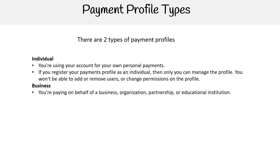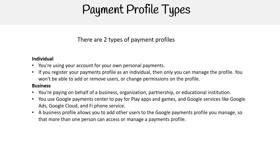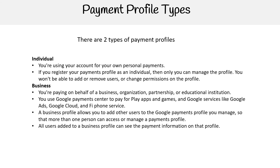Then we have business — you're paying on behalf of a business, organization, partnership, or educational institution. You use Google Payment Center to pay for Play apps, games, Google services like Google Ads, Google Cloud, and Fi phone service. A business profile allows you to add other users to a Google Payment profile you manage, so that more than one person can access or manage payment profiles. All users added to a business profile can see the payment information on that profile.